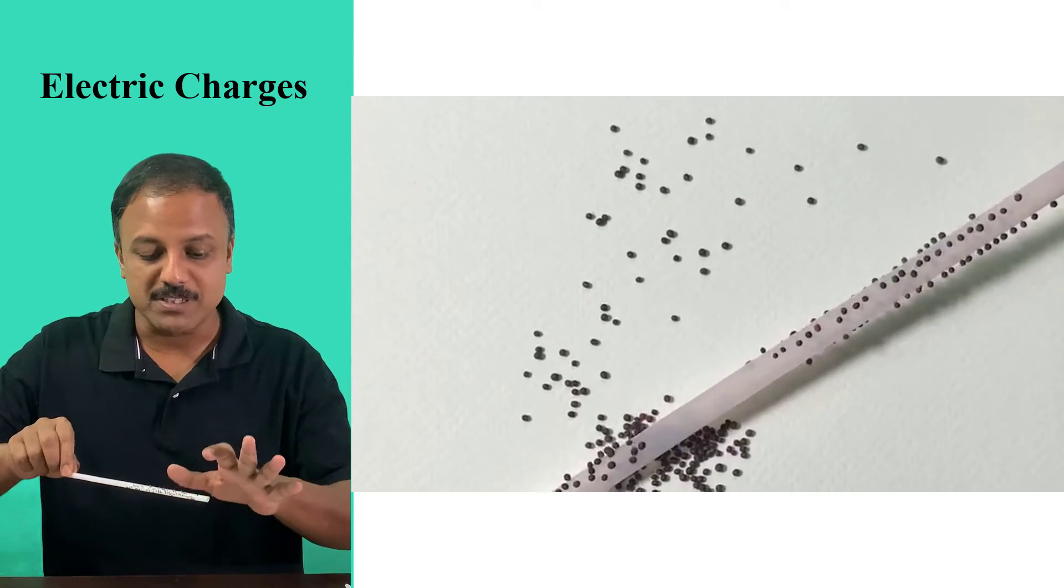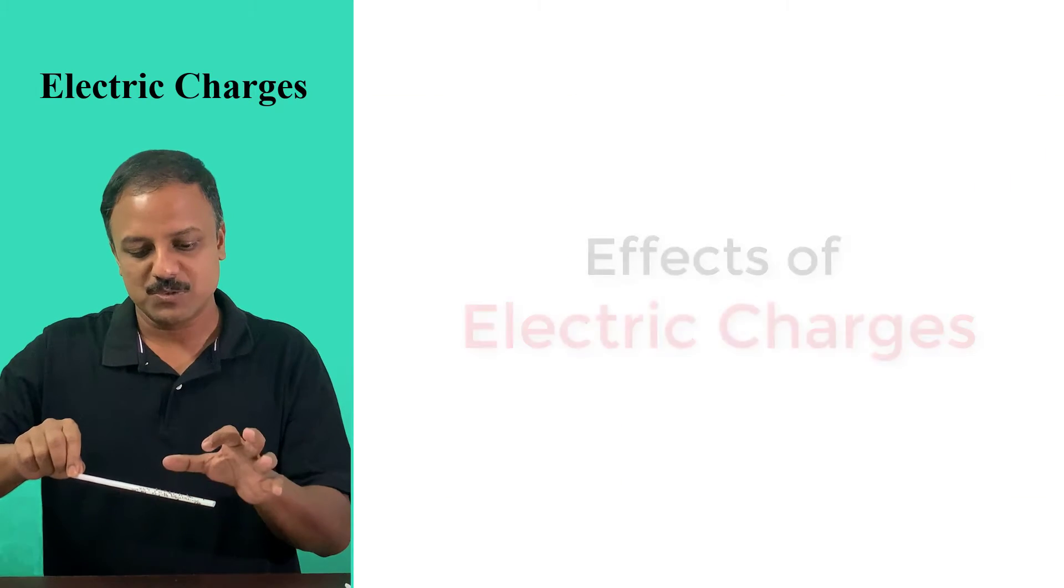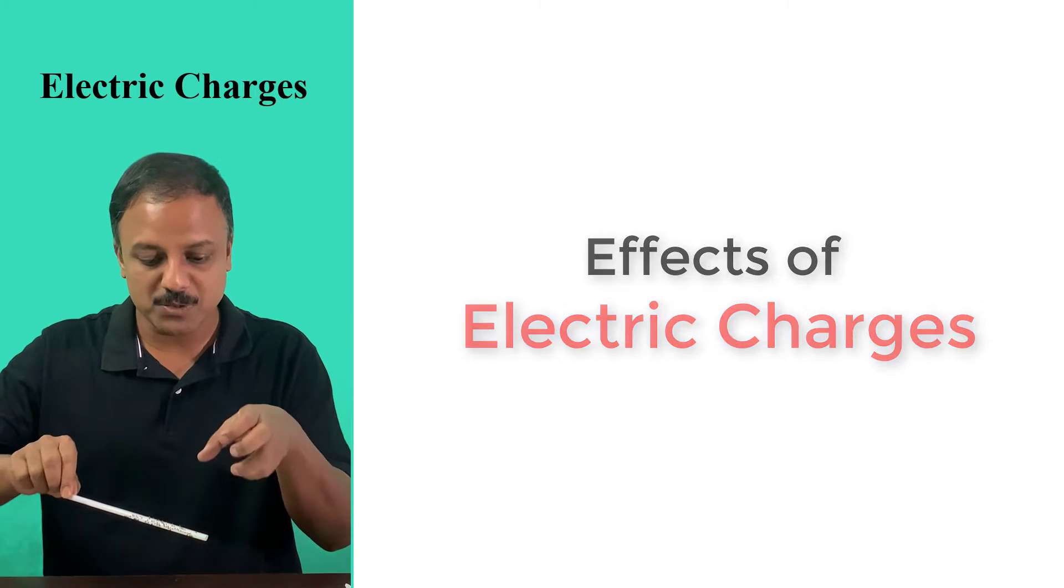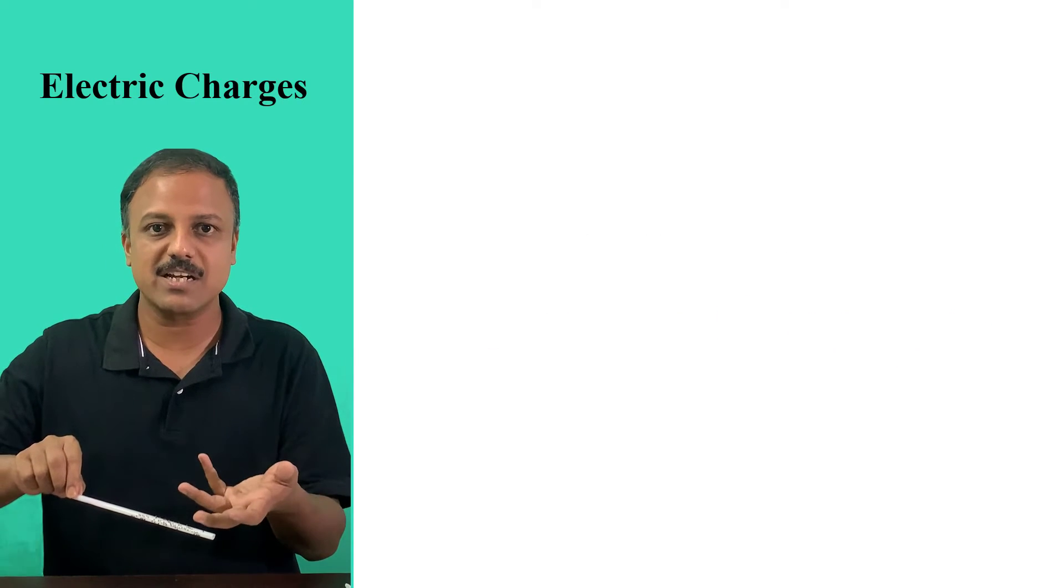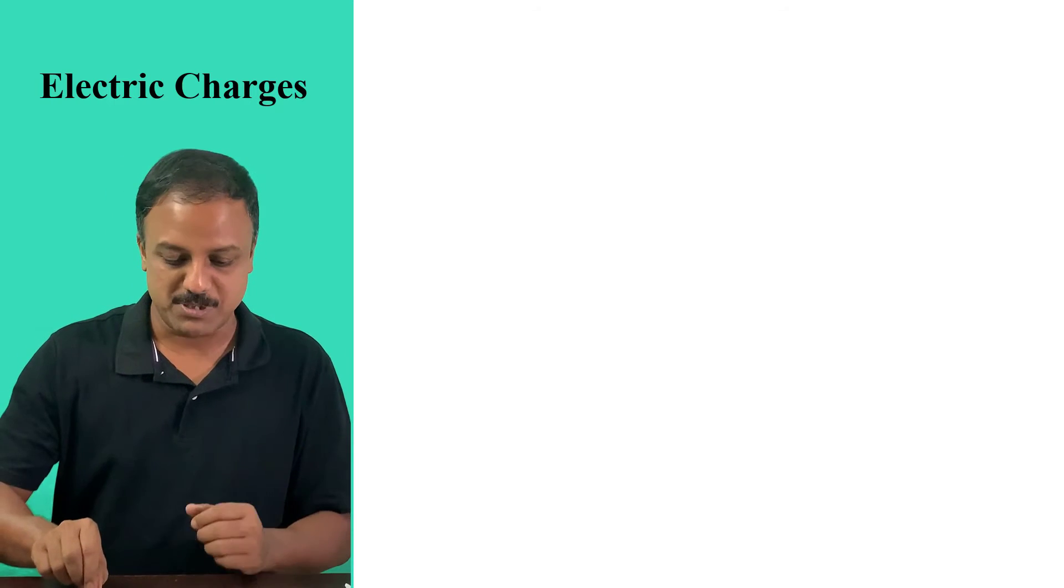So how does this happen? This is what we said. We are looking at the effects of electric charges. So these electric charges which are present on the straw are attracting those seeds here. Now, how does this attract? That's another question. So let's look at another experiment here.